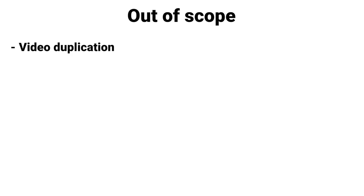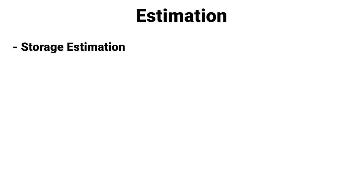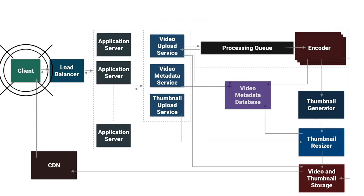Now let's discuss what is out of scope for our system: handling video duplication and video deletion. Deleting a video is out of scope, although it's a very small task. Now we can do the estimation part, but for now I will leave this up to you — do the storage estimation and bandwidth estimation, and let me know your findings in the comment box. You can estimate based on 1 billion total users.